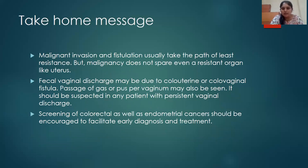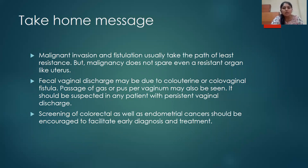So we saw an interesting case — but what did we learn from it? Malignant invasion and fistulation usually take the path of least resistance, but malignancy does not spare even a resistant organ like the uterus. Fecal vaginal discharge may be due to a colorectal uterine or colovaginal fistula. They can also present as passage of gas or pus per vaginum. The patient may not be able to differentiate passage of gas or pus per vaginum from per rectum. It should be suspected in any patient with persistent vaginal discharge as well.